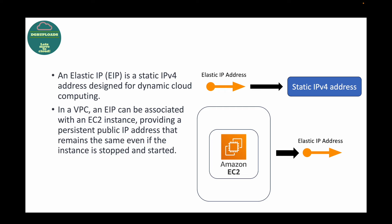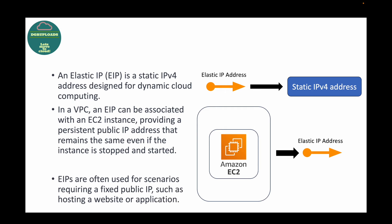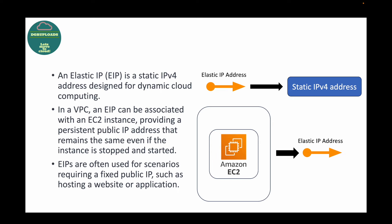With an Elastic IP, you get a persistent public IP address which does not depend on the state of your instance — so even if you stop or start the instance, the IP address remains the same. Elastic IPs are often used for scenarios requiring a fixed public IP, such as hosting a website or an application where you need a static IP address.